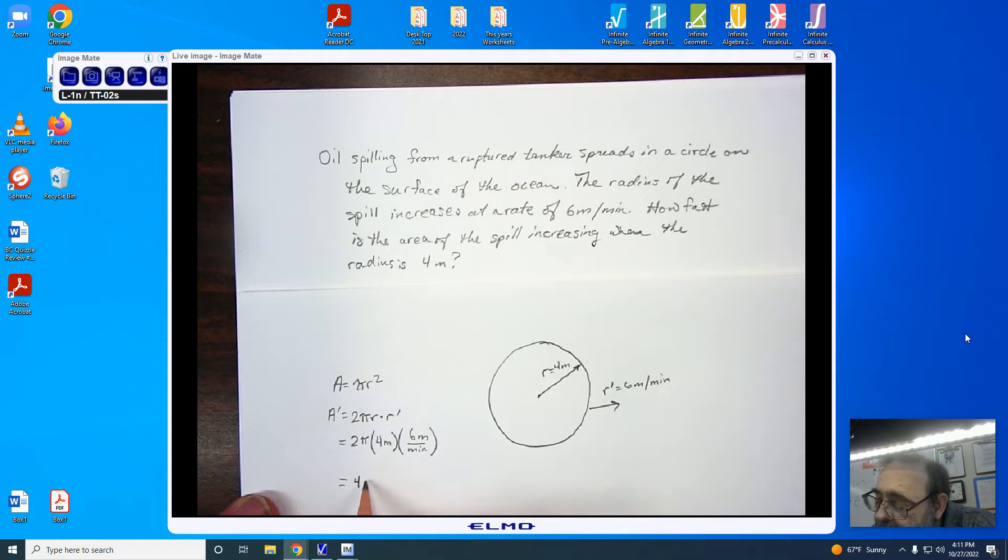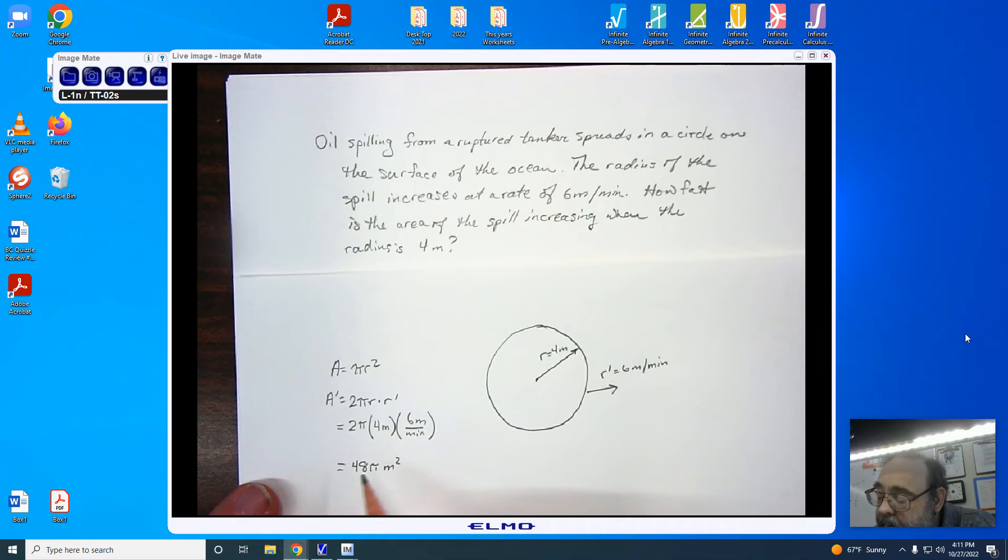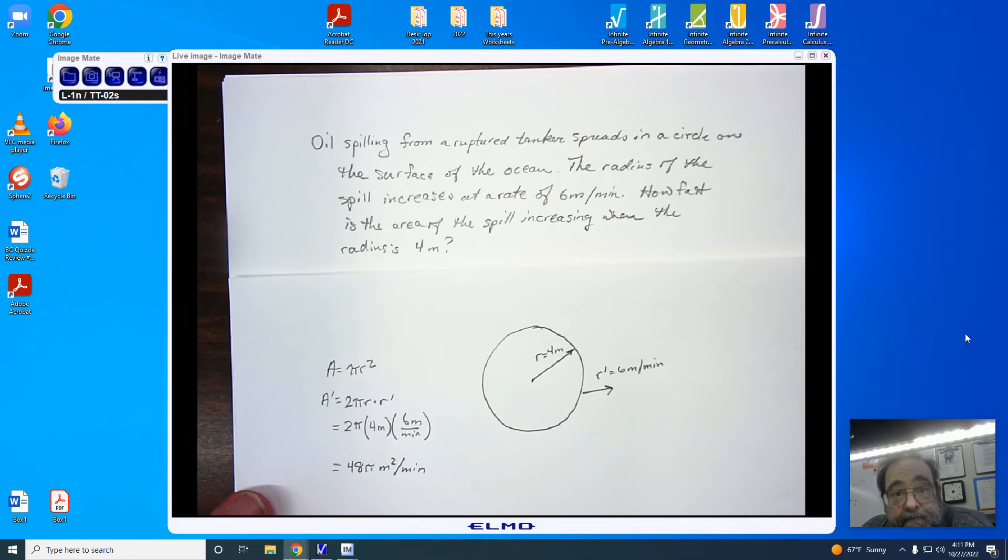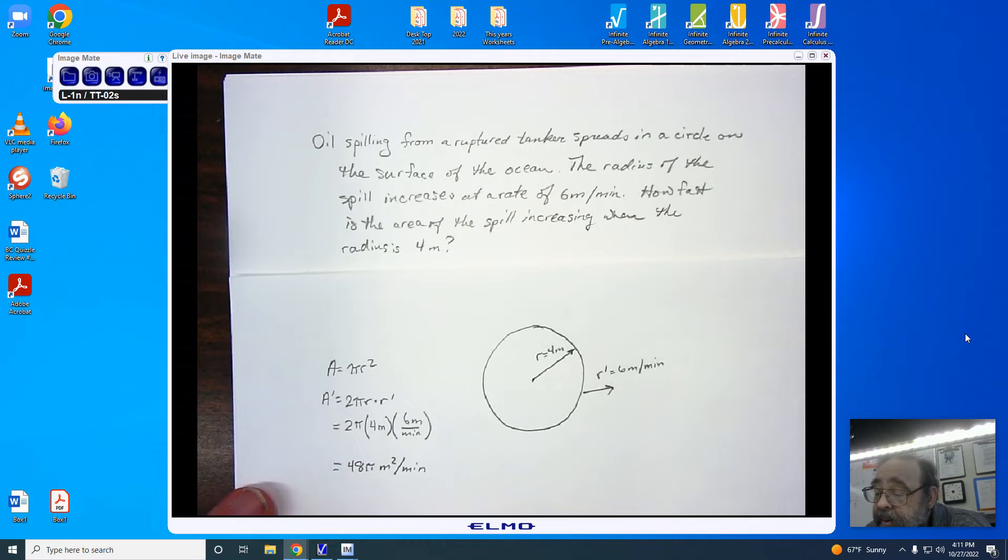and I'm looking at 48 pi meters squared, meters times meters is meters squared, divided by minutes. We're then going to just identify our answer on a multiple choice question if that's what we had. And that's our first example.